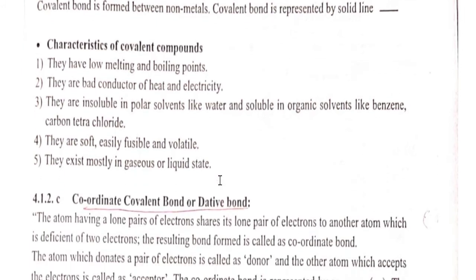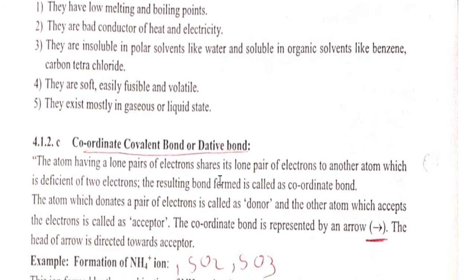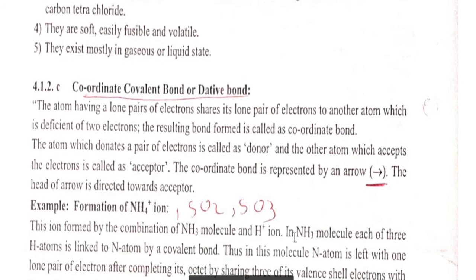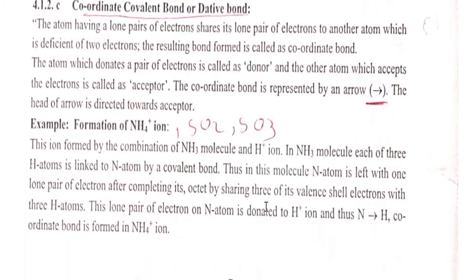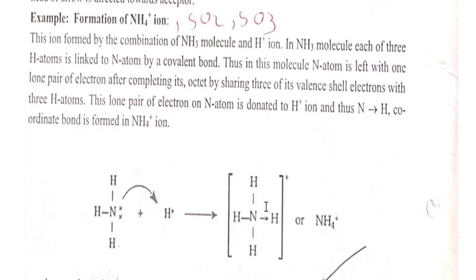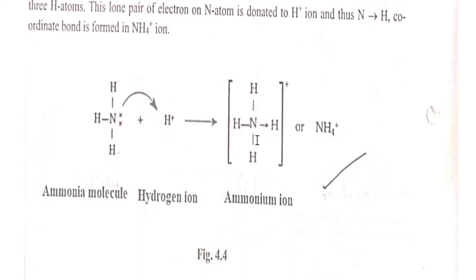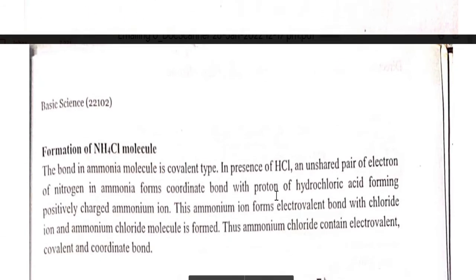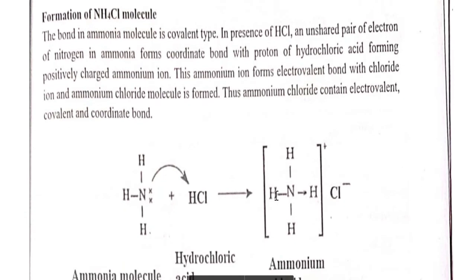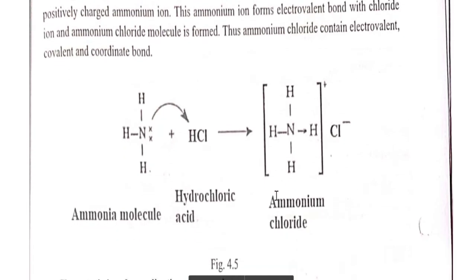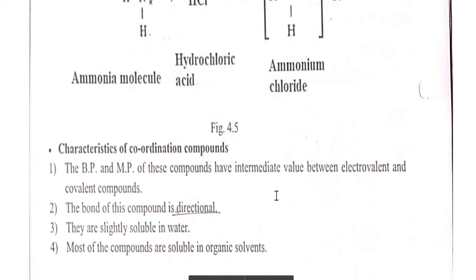Coordinate bond is also known as dative bond; it is denoted by an arrow. Examples of dative bond are formation of NH4+, SO2, and SO3. Formation of NH4Cl molecule also involves a coordinate bond, known as dative bond.